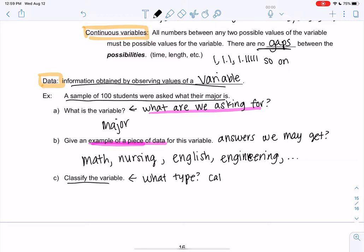And then classify the variable just means what type. So the choices were categorical, and then I'm going to split up the numerical version, so discrete or continuous. So there's three choices. So peek up at those definitions, and which one was this? So since it's in words, and there's no numerical value, it'll be categorical. Major does not have a numerical value.